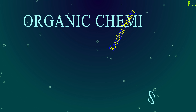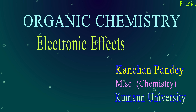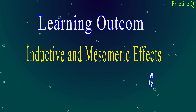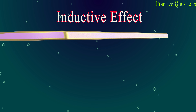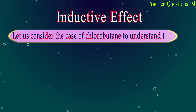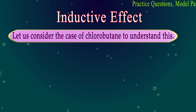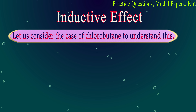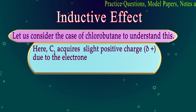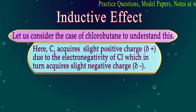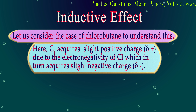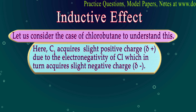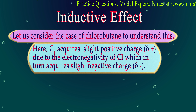The organic chemistry topic is electronic effects. Let us understand inductive effect with some examples. The case here is chlorobutane, which has 4 carbons attached with chlorine. C1 will acquire a slightly positive charge, delta plus, because it is less electronegative than chlorine.